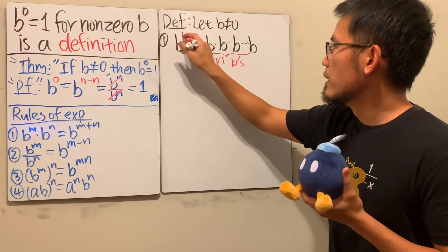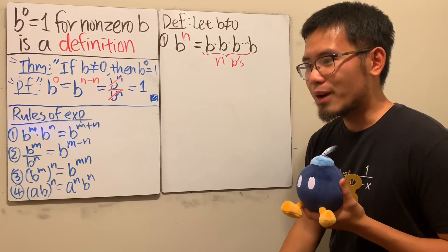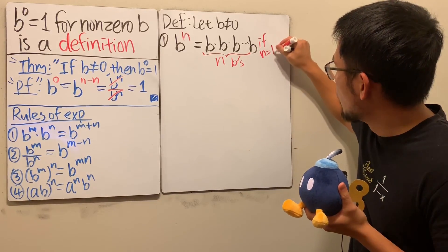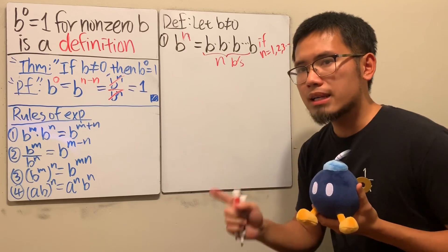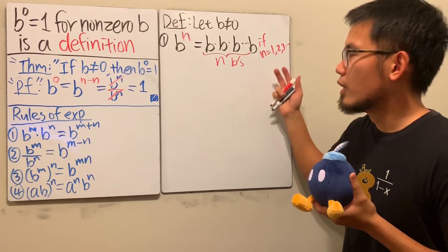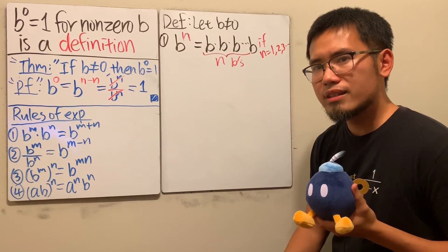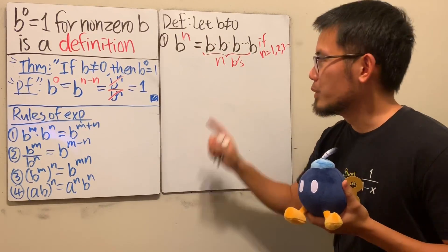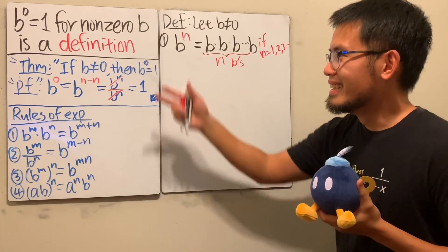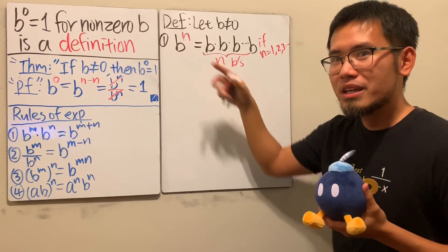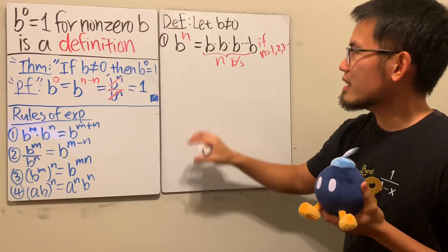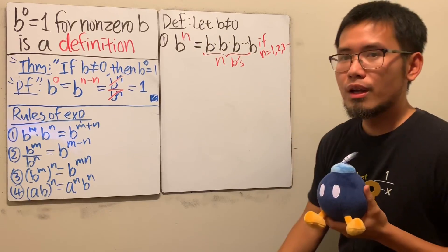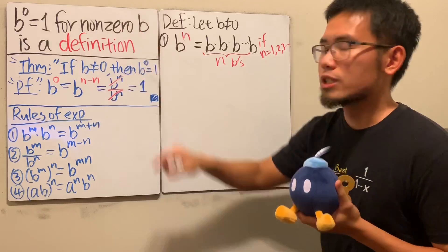This is the definition of exponent that you first see. However, this is only valid when n is one, two, three, four, five, and so on — namely positive whole numbers. What if n equals one half? We can't use this definition. What if n equals the square root of two? We can't use this definition. And most importantly for this video: what if n equals zero? We can't use this definition either. So we have not yet given a meaning to b to the zero power.